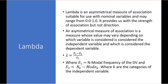Lambda is an asymmetrical measure of association suitable for use with nominal variables, ranging from 0 to 1. It provides only the strength of association, not direction. An asymmetrical measure is one whose value may vary depending on which variable is treated as independent versus dependent. The formula is lambda = (E1 − E2) / E1, where E1 = n minus the modal frequency of the dependent variable, and E2 = the sum across categories of the independent variable of (category total minus the mode for that category).